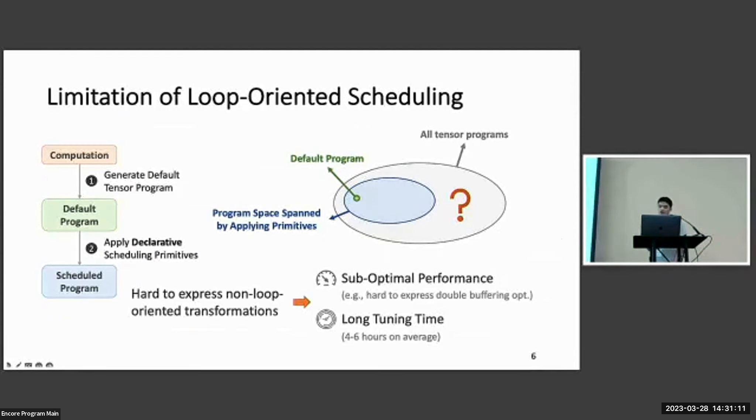This makes TVM have suboptimal performance because it cannot express some optimizations such as double buffering, and it cannot have good support for efficient parallel time, which makes it have a long tuning time.